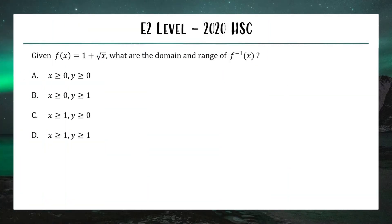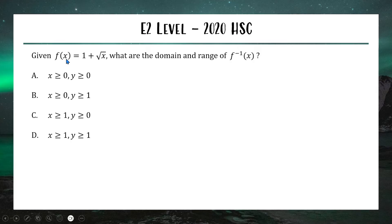On to a harder one from the 2020 HSC exam — it's a multiple choice at the E2 level. We've got a function and we want to find the domain and range of the inverse. The cool trick is that going from your function to your inverse is just swapping x and y variables. So the domain of the function becomes the range of the inverse, and the range of the function becomes the domain of the inverse.